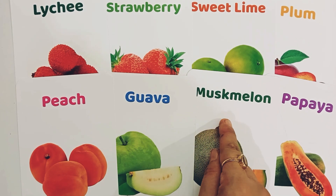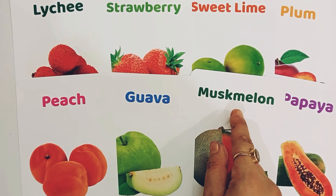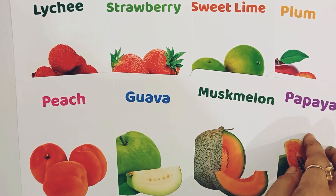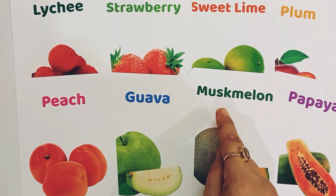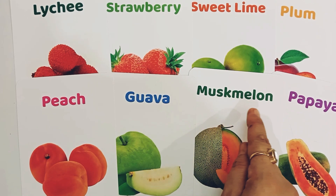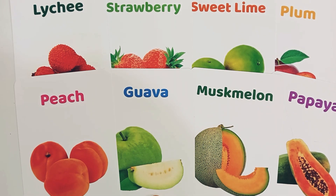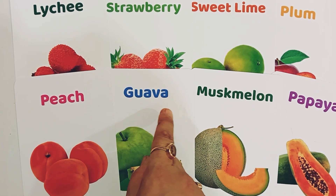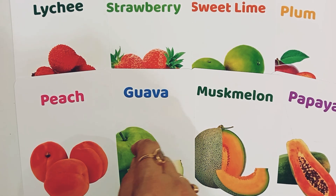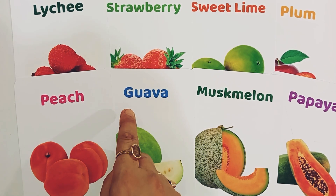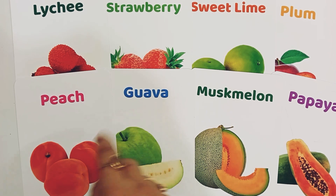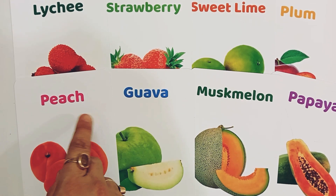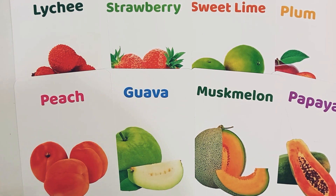M for musk melon. M-U-S-K-M-E-L-O-N, musk melon. Musk melon is a fruit. G for guava. G-U-A-V-A, guava. G for guava. G-U-A-V-A, guava. G for peach. P-E-A-C-H, peach. Which is a fruit?